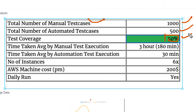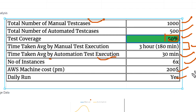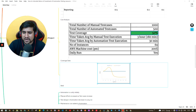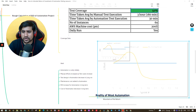Looking at execution time: from a manual point of view it takes around 180 minutes, almost three hours, but through automation it's reduced to about 30 minutes. For instance, we used a one-dollar AWS machine to run the automation daily, which demonstrates the reduced cost in terms of both time and infrastructure.